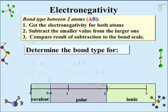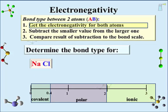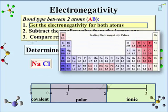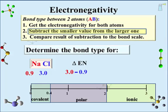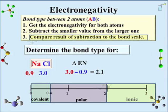What about the bond in NaCl, sodium chloride? Our first step is to get the electronegativity for both atoms. According to the Pauling scale, sodium is 0.9 and chlorine is 3.0. We subtract the smaller from the larger, giving a difference of 2.1, which we take to the bond scale and find the bond to be ionic.